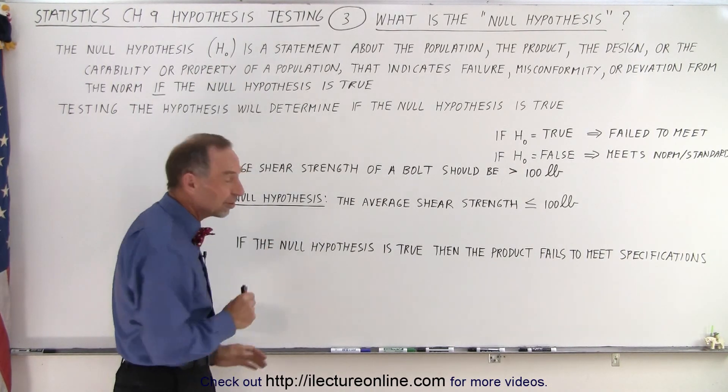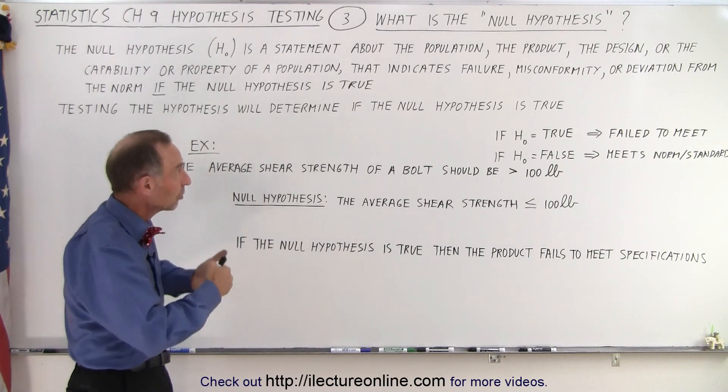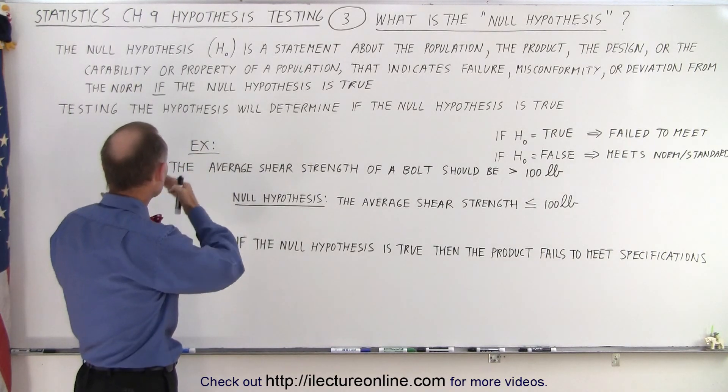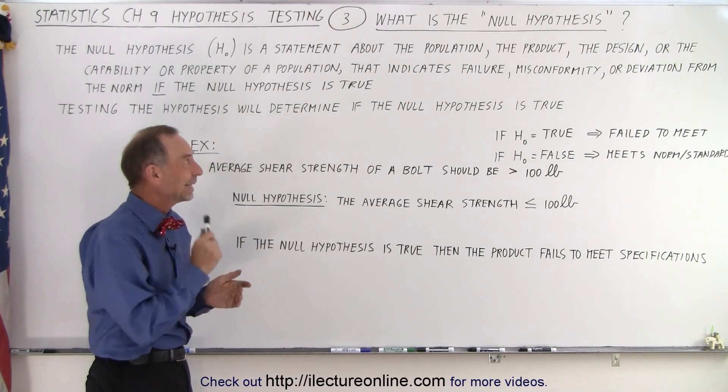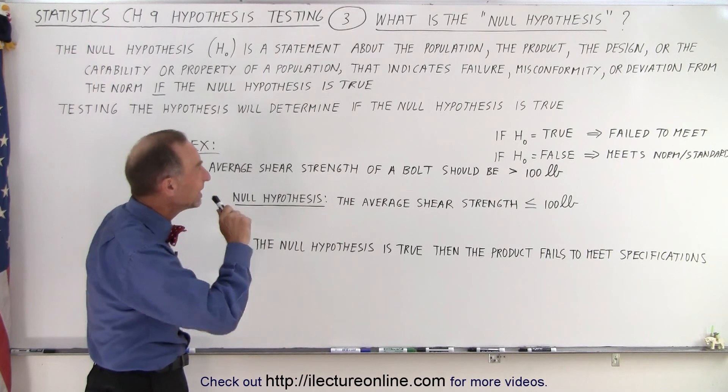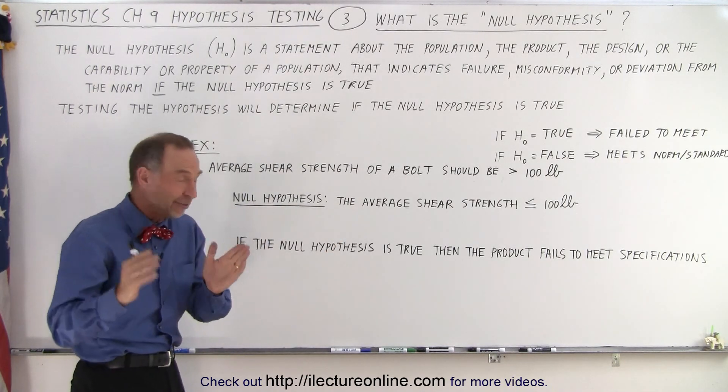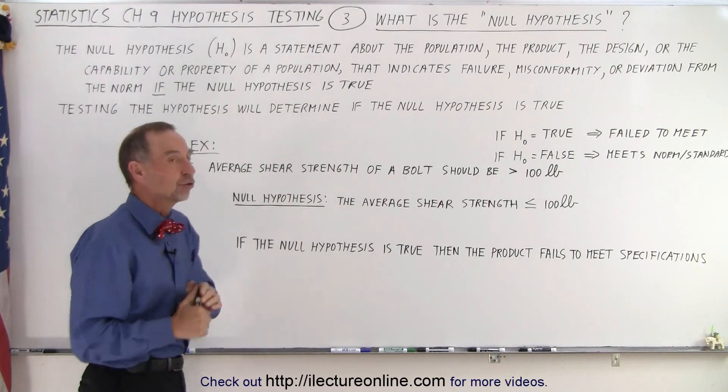So the null hypothesis is a statement about the population, the product, the design, or the capability or property of a population that indicates failure, nonconformity, or deviation from the norm if the null hypothesis is true.